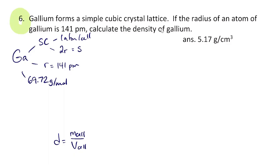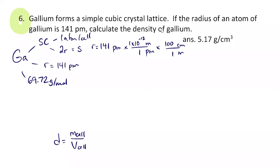The radius was given in picometers, so we'll switch picometers to meters and then meters to centimeters, because the volume we calculate will be in cubic centimeters. The prefix pico means 10 to the minus 12, so one picometer is 1×10⁻¹² meters, and 1 meter has 100 centimeters. So 141 × 10⁻¹² × 100 = 1.41×10⁻⁸ centimeters.